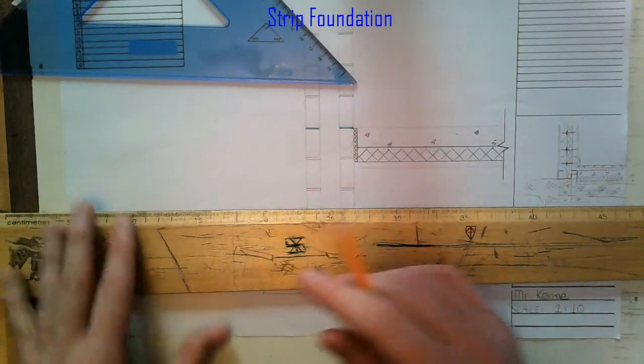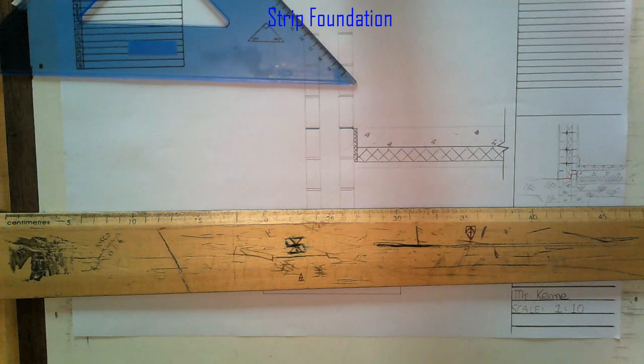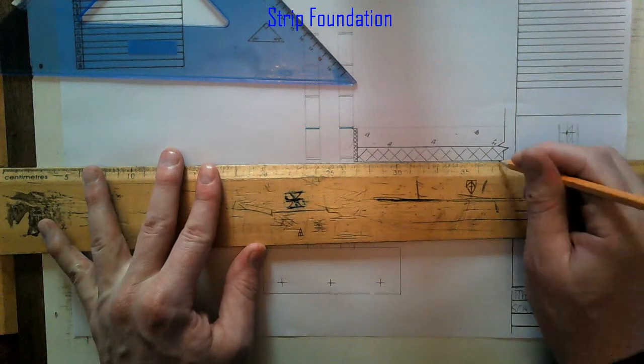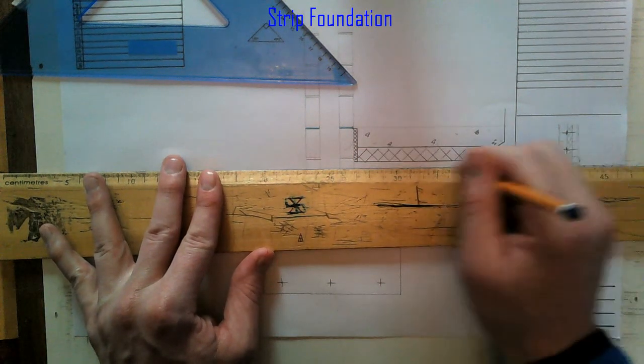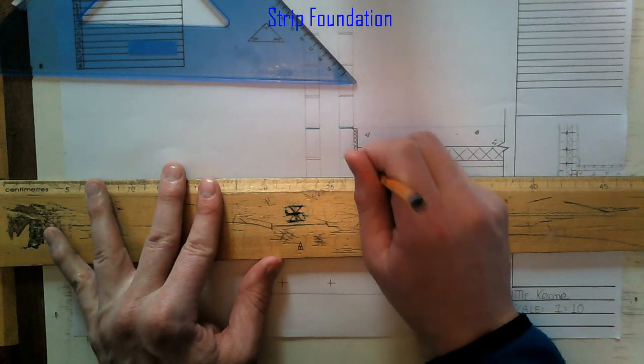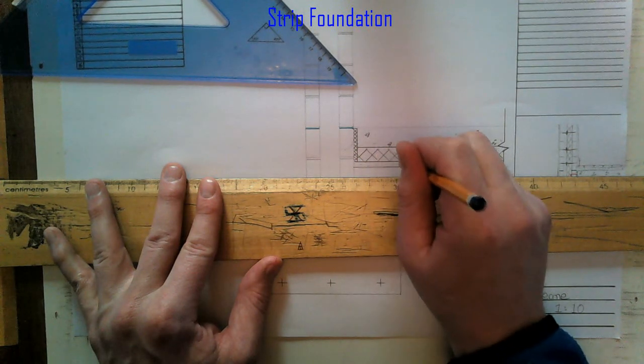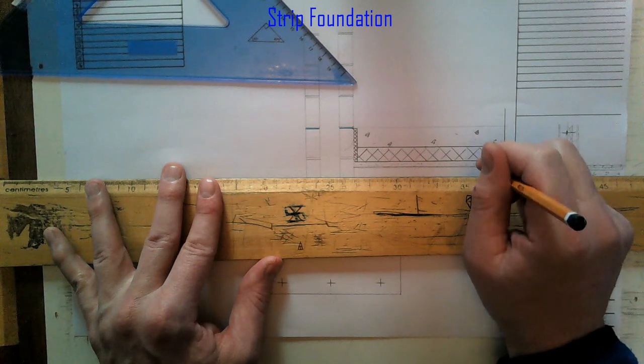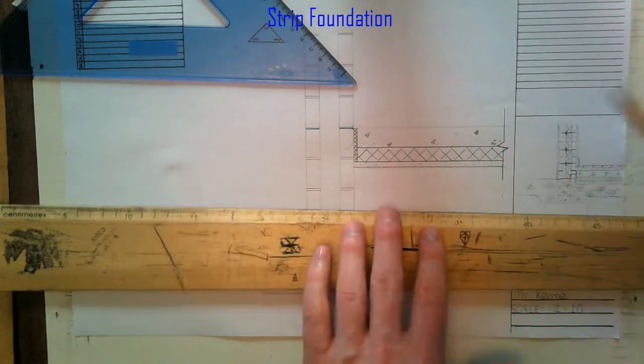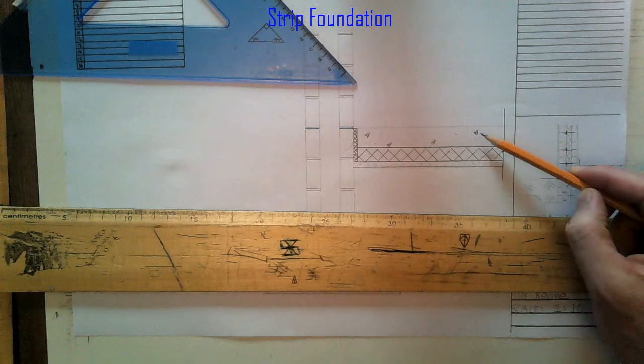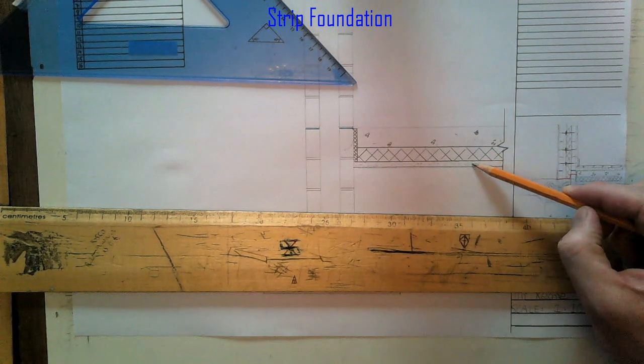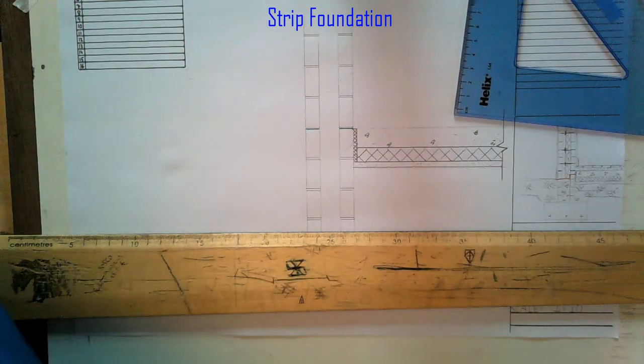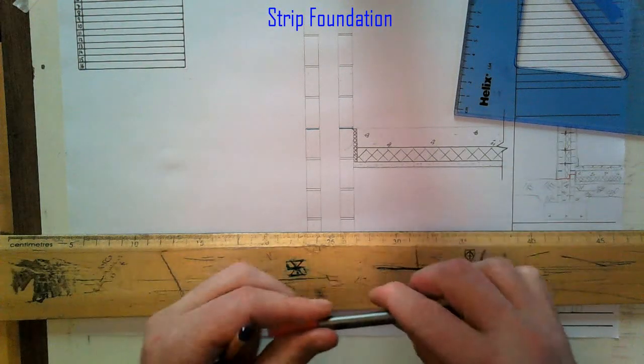Then we're looking at our 40mm blinding. Just fine sand that sits on top of the hardcore. The difference between the subfloor, which is concrete, and this is your sand. So then we have our radon barrier.